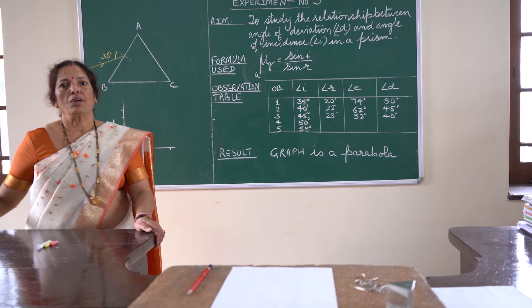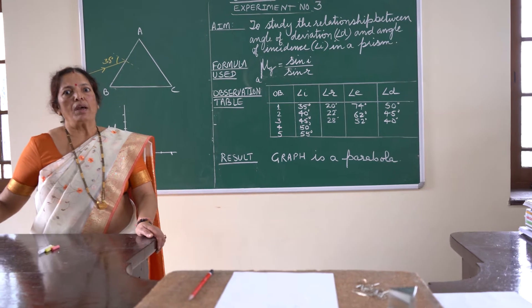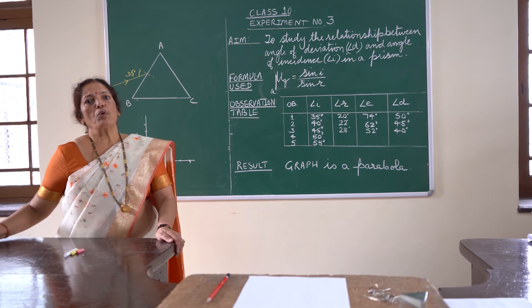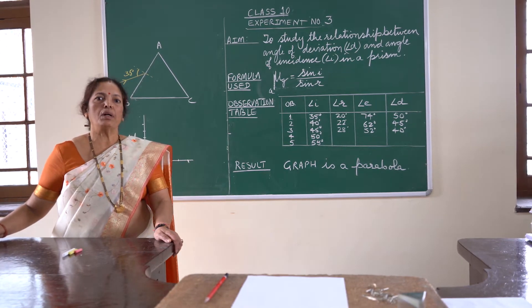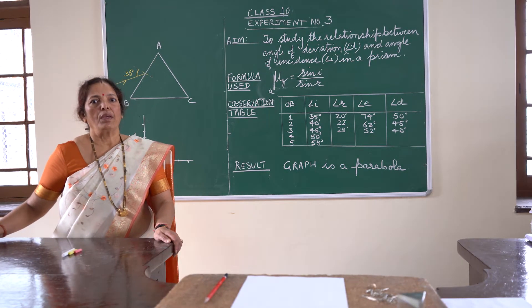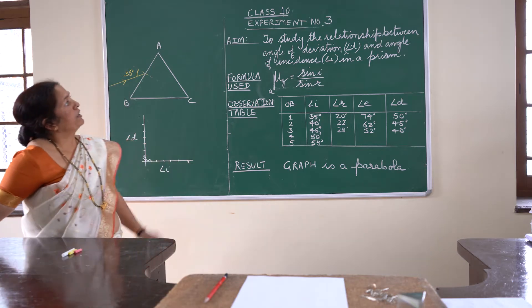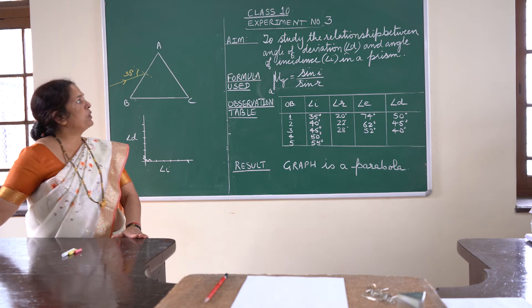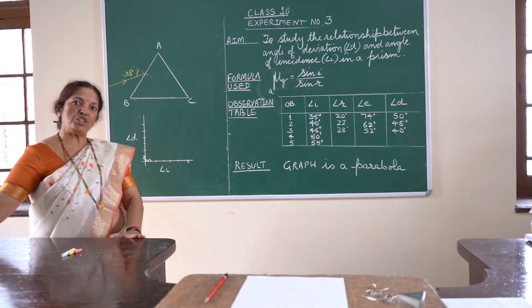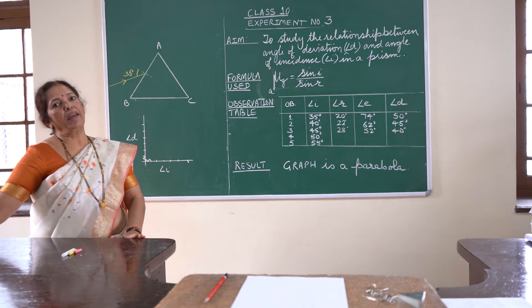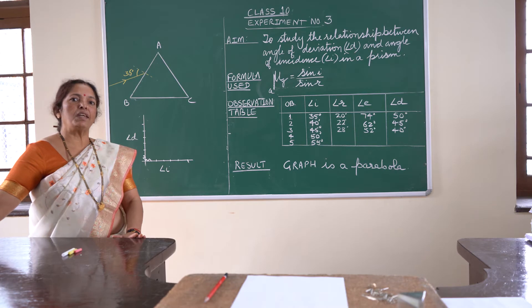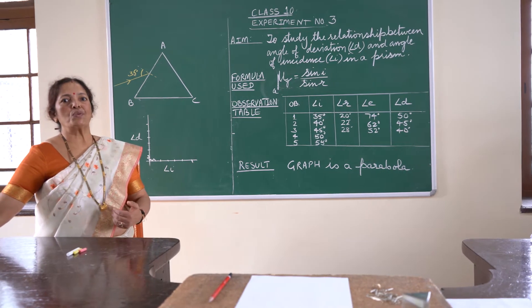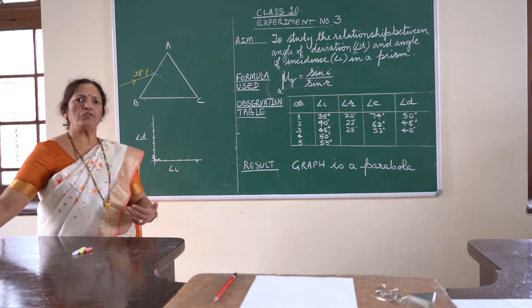Good morning. Today I'm going to explain how to perform the experiment based on a glass prism. The aim of the experiment is to study the relationship between the angle of deviation and angle of incidence in a glass prism, and by changing the values of angle of incidence we'll try to find out how the angle of deviation changes.